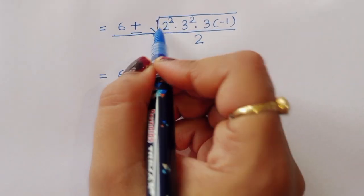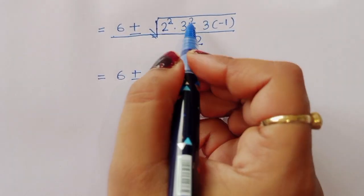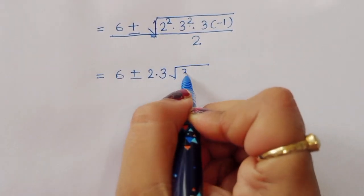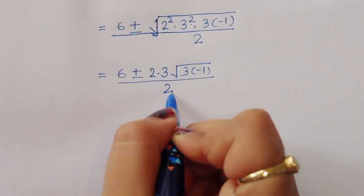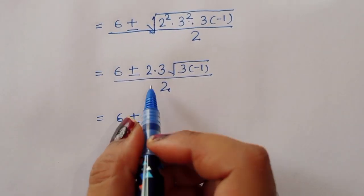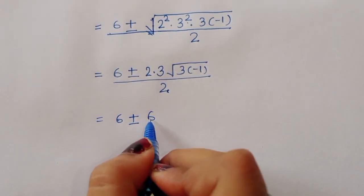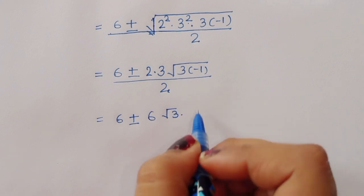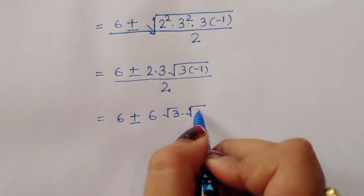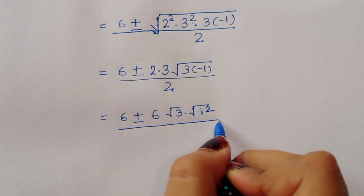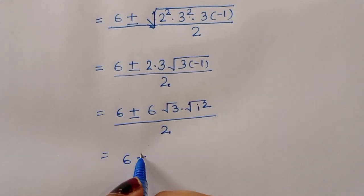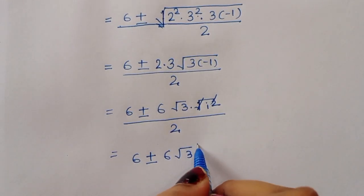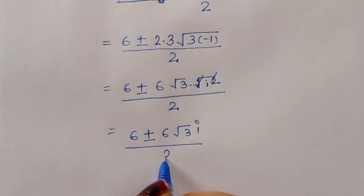Simplifying the square root of minus 108: we take the square root of 3 outside, and the square root of minus 1 becomes i. So the square root of minus 108 equals 6i times the square root of 3. This gives x equals 6 plus or minus 6i square root of 3, all divided by 2.